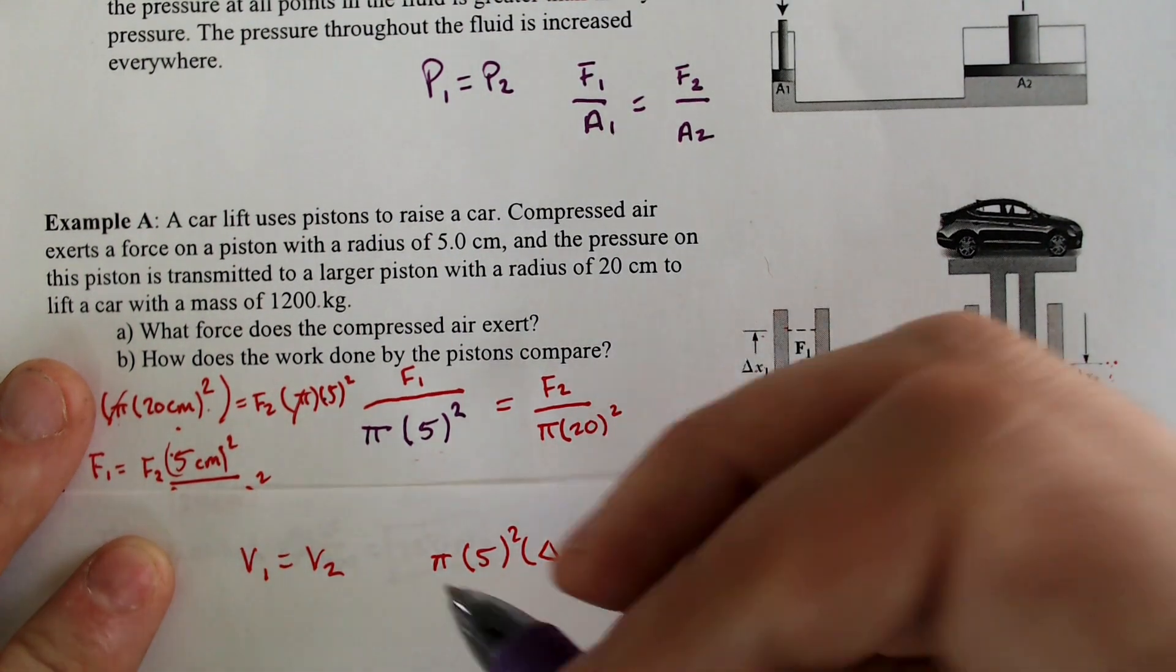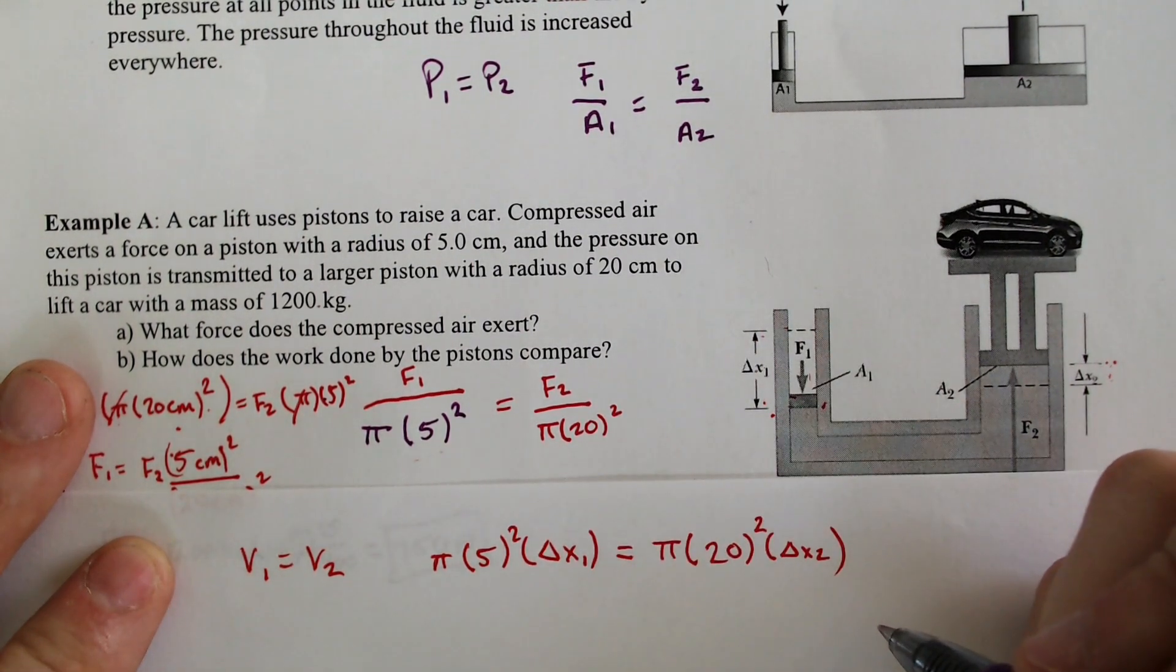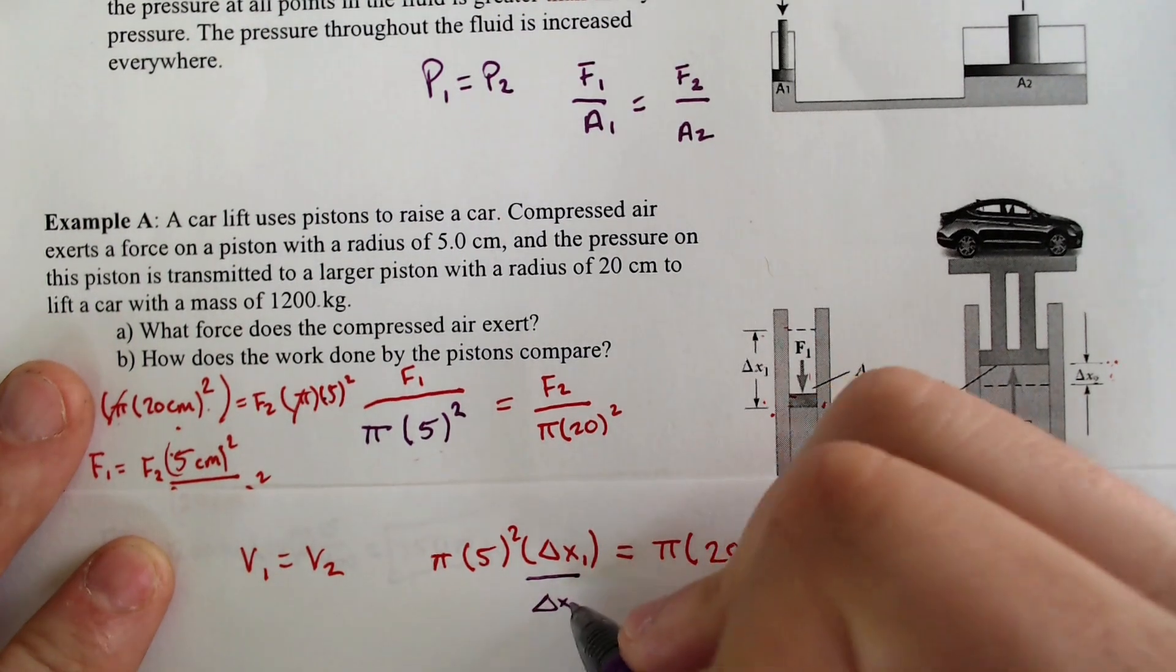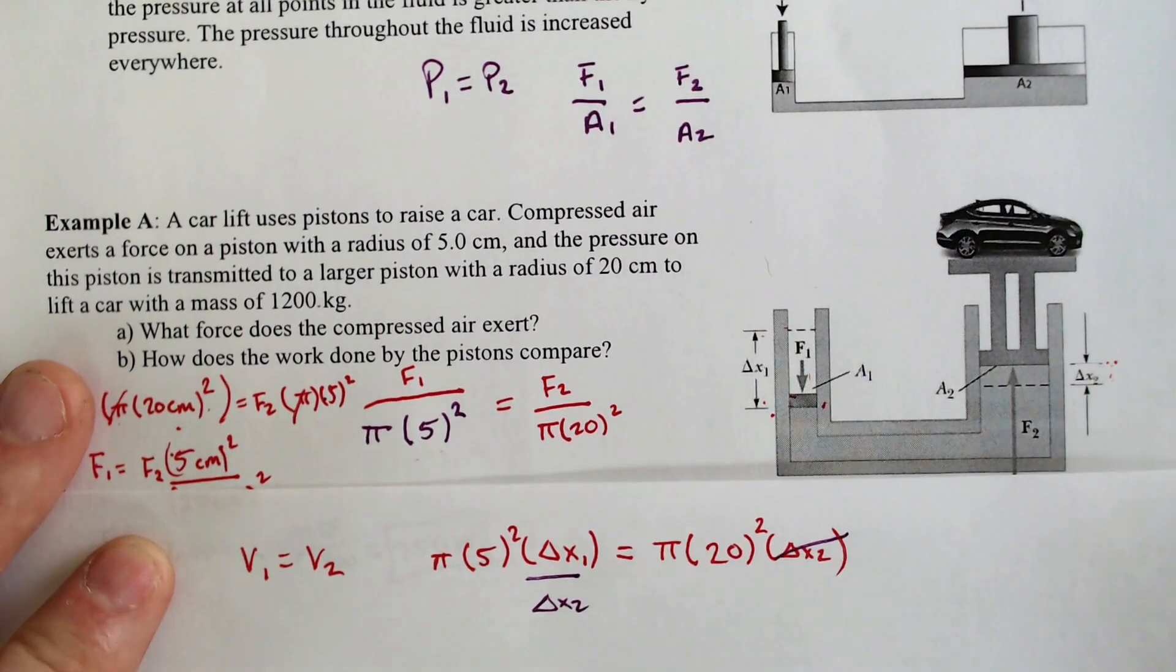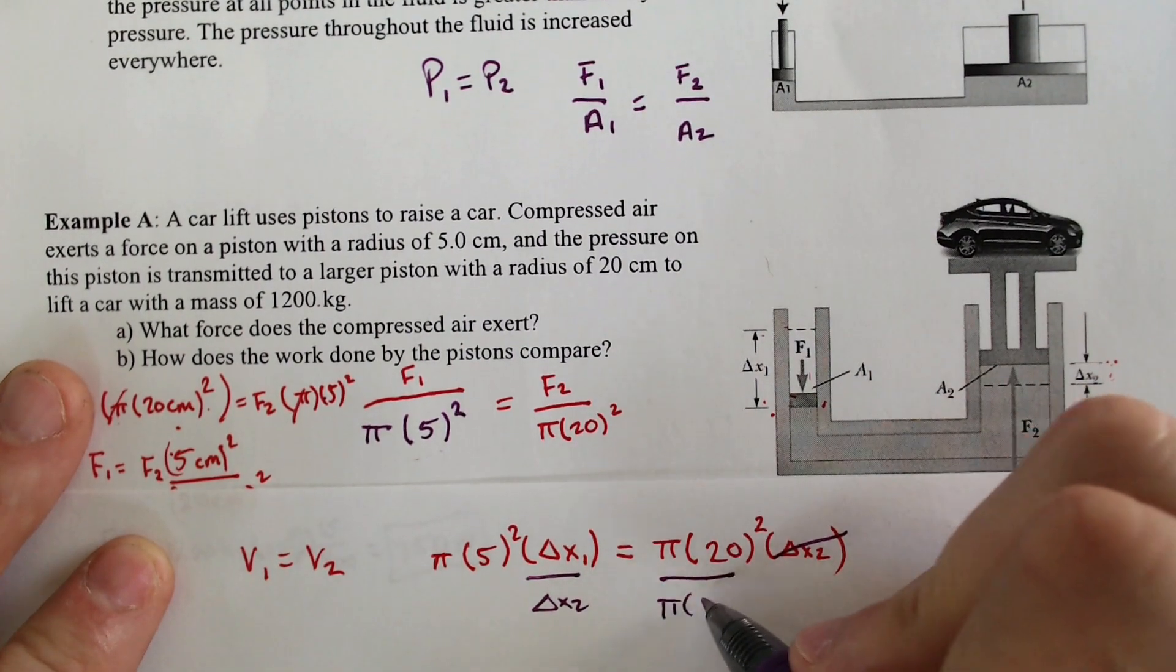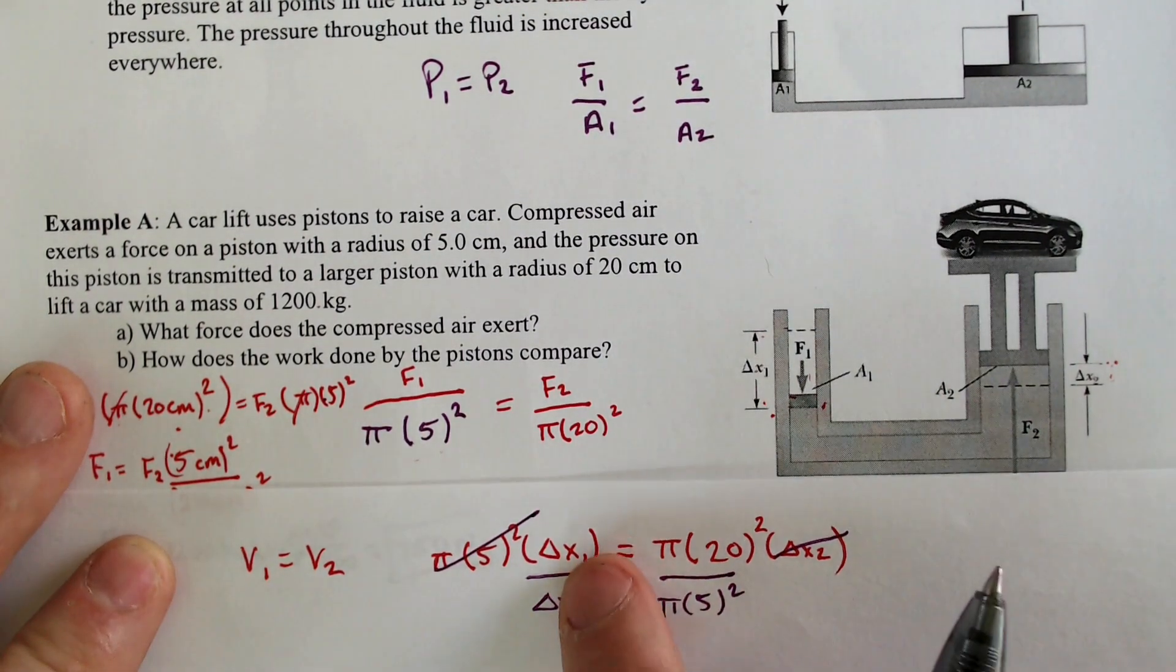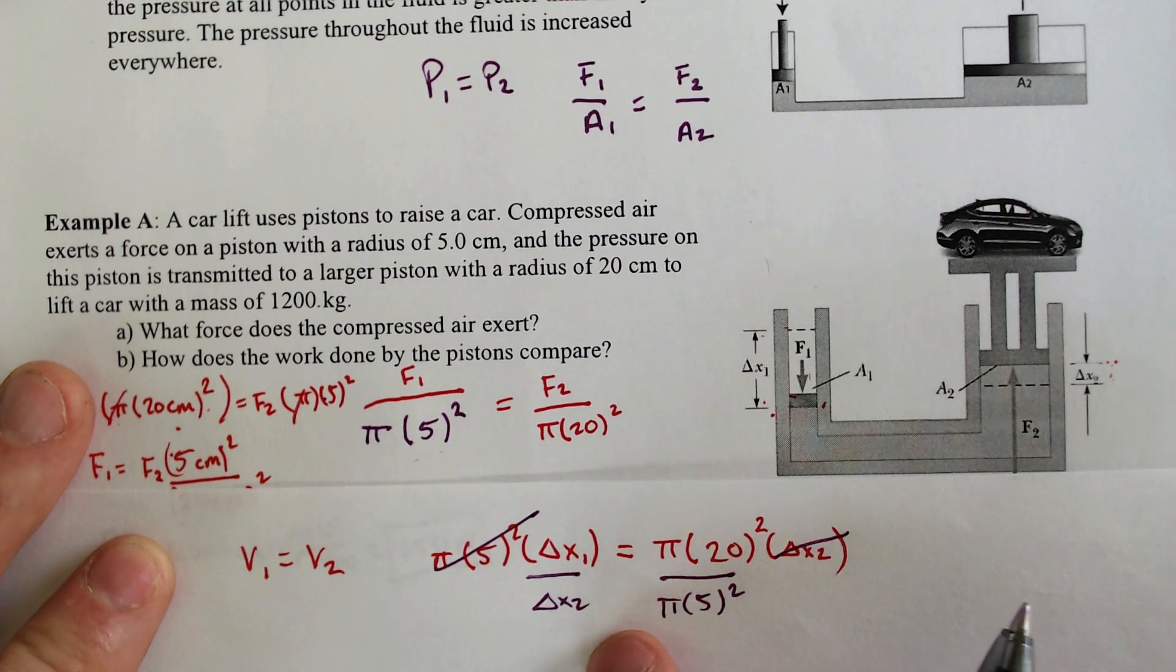So we can solve for delta x1 and delta x2 by using just some dividing techniques. I'm going to have the x1 on top. So I'm going to divide by delta x2, and that would cancel. And I'm going to divide by pi times 5 squared, and that would cancel.